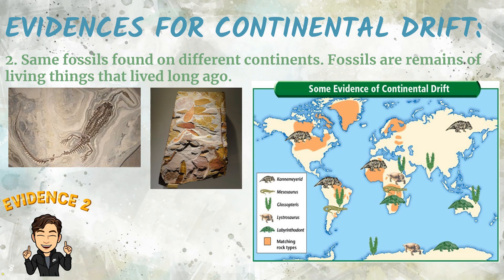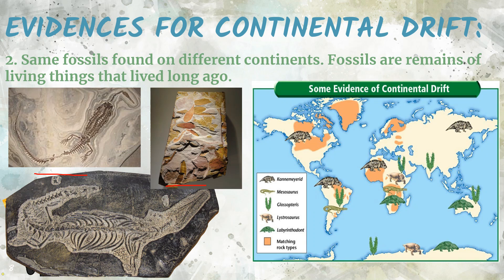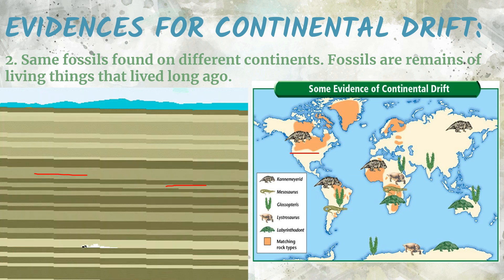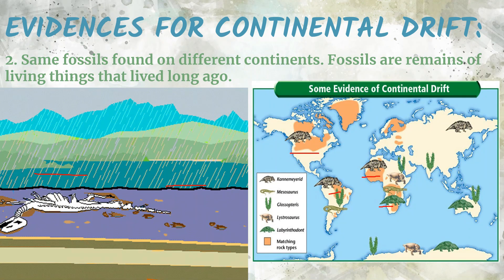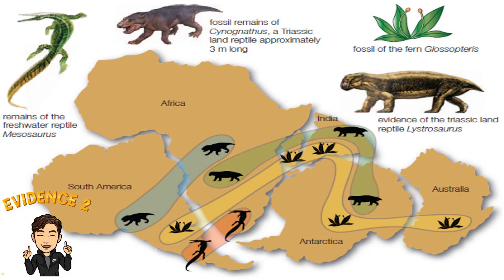The next evidence supporting continental drift is that the same fossils are found on different continents. Fossils are remains of living things that lived long ago, such as the Mesosaurus and the Glossopteris. As you can see, these same fossils are found on different continents. The Glossopteris fossil, for instance, is located in South America, Africa, India, Antarctica, and Australia.